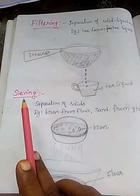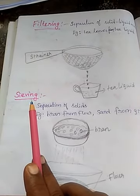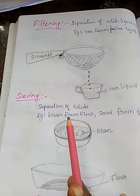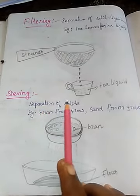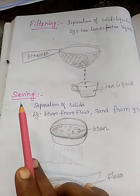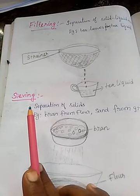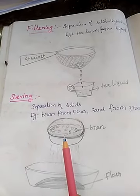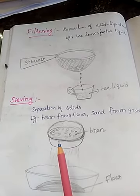Next, what is sieving? The method used for separating solid particles of different sizes. Here we see the separation of different solids. For example, bran from flour.